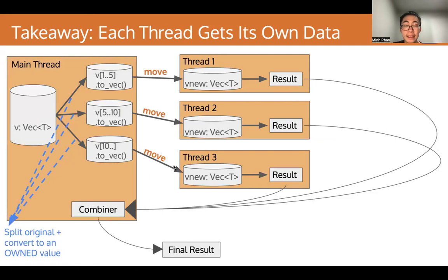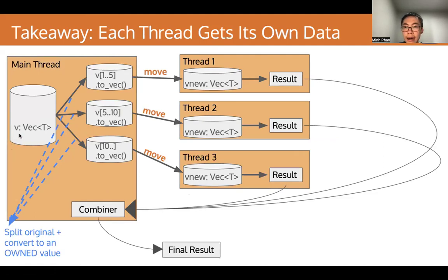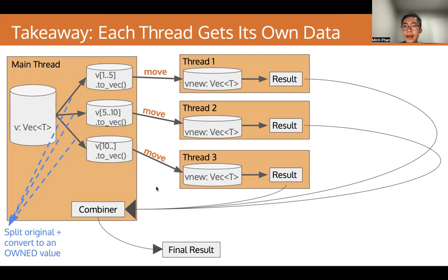The takeaway is that we must give each thread its own data. Here is a revised and correct version of the MapReduce model. Instead of giving each thread a reference to V, we give them owned values. When we split the original value V, we first convert the slices into owned values — in the case of a slice, we can call to_vec to convert them into owned vectors. Each thread then has vectors — owned values — instead of references. And owned values never become invalid, unlike references.